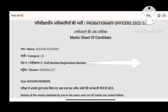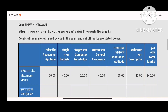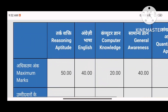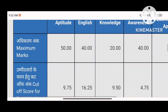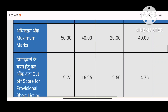First of all, you can see here my name is Shivani Keswani. My category is UR and I have applied for the Generalist post. This paper is full of 240 marks. Reasoning is 50 marks.